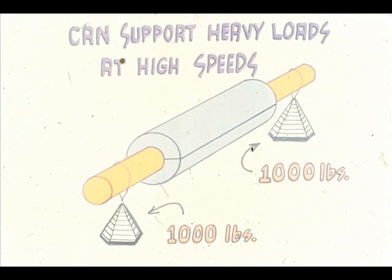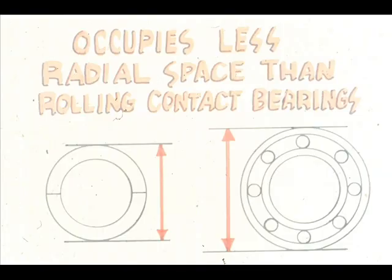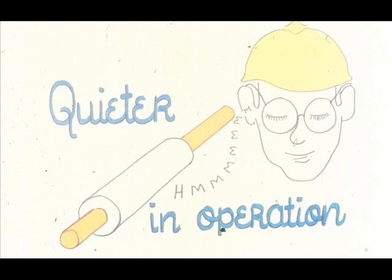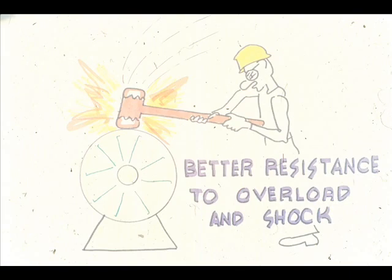Now let's examine some of the advantages and disadvantages of sleeve bearings. To begin with, sleeve bearings can support very heavy loads at high speeds. They usually require less radial space for installation, which is a very important consideration in some machines and equipment. Sleeve bearings are also normally quieter in operation than most rolling contact bearings, since they have no moving parts. Because of their solid construction, they have a much better resistance to unexpected overload and shock conditions.